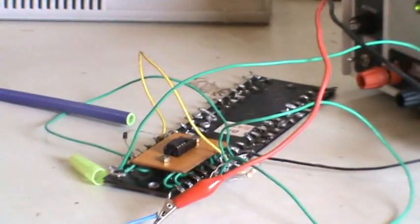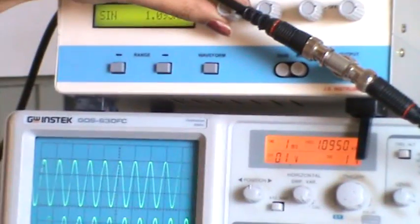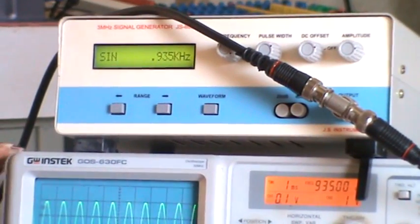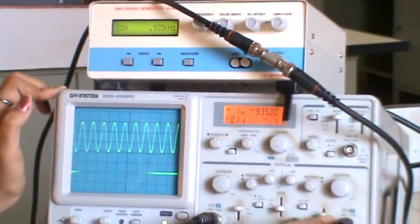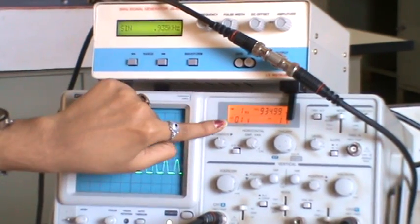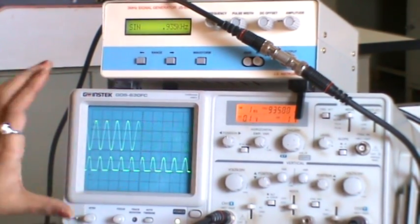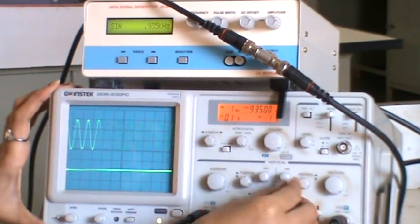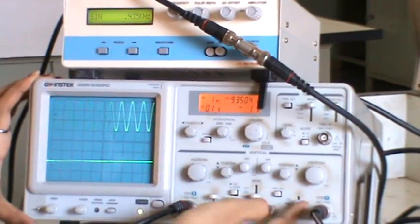You can see the connection. Keep this signal generator to 1 kilohertz. Observe this, input should be in AC and output should be in DC. 1, 2, 3, 3 into 0.1 will give you 0.3 volt peak to peak input. Now if I measure the output, put it to ground and keep it to the middle, put it to DC.